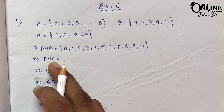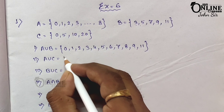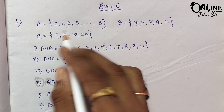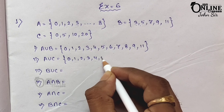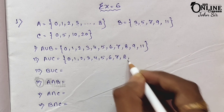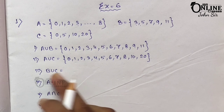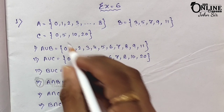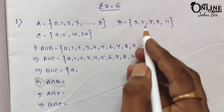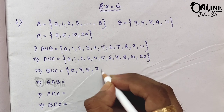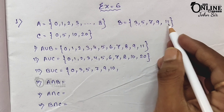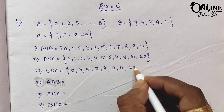Next, A union C means this one and this one. So 0 to 8: write down 1, 2, 3, 4, 5, 6, 7, 8, then 10 and 20. Now B union C: combining B and C gives 0, 3, 5, 7, 9, 10, 11, and 20.